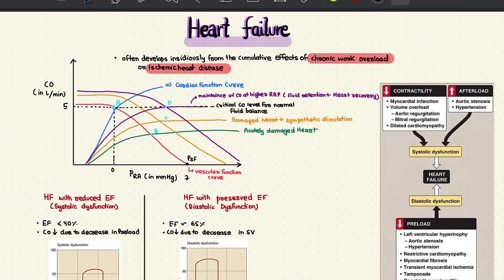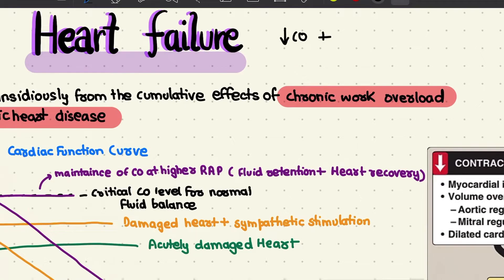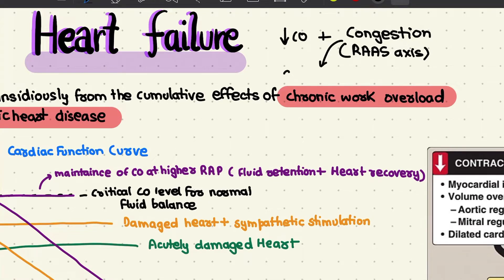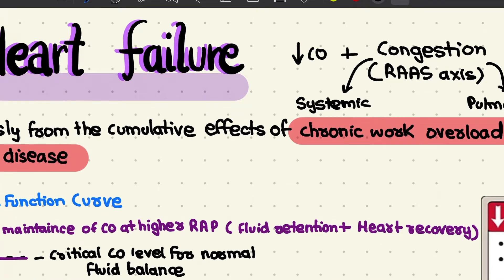Heart failure is a syndrome resulting from any functional or structural disorder of the heart that results in, or increases the risk of, low cardiac output. We have low cardiac output and sometimes symptoms of congestion. This congestion usually results from activation of the RAS axis and can take place in the systemic portion or the pulmonary circulation, leading to fluid accumulation — hence the term congestive heart failure.